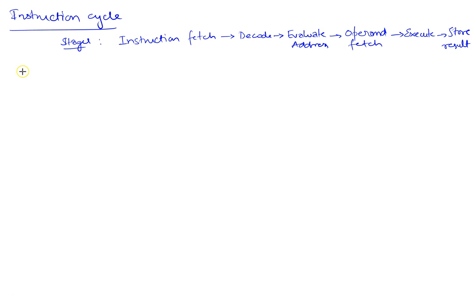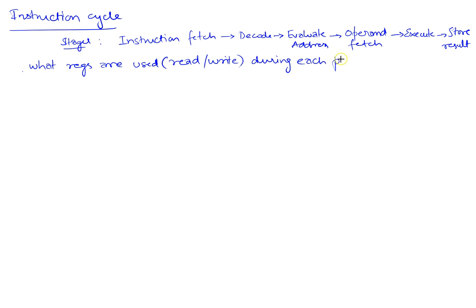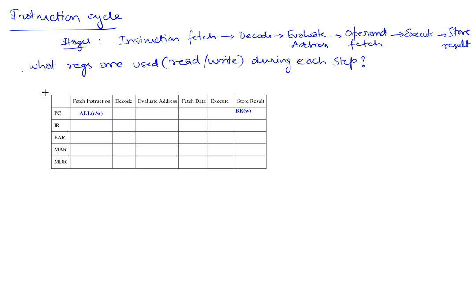One of the homework questions asks you to look at these stages and identify what registers are used — meaning either read or written to — during each phase. To answer that, we first have to identify what the registers are. The registers we're asking about are the program counter PC, the instruction register IR, the effective address register EAR, the memory address register MAR, and the memory data register MDR.